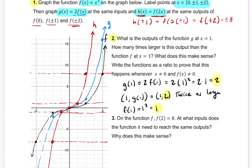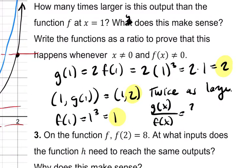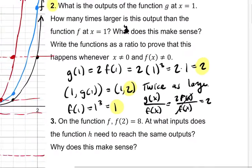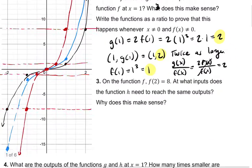Why does this make sense? Write the function as a ratio. To prove this happens, x does not equal 0, and f of x does not equal 0. Okay. So we've got g of x as a ratio to f of x. If we do that, let's just zoom in a little bit, g of x is twice f of x over f of x. You don't want to divide by 0, so f of x can't be 0. But otherwise, these cancel out, and you get 2. That tells you that the ratio of the heights is always going to be 2. So here's a way to look at that vertical scale. On to number 3.